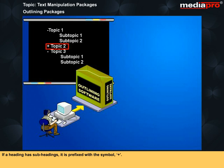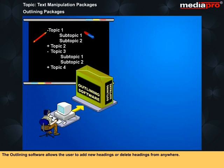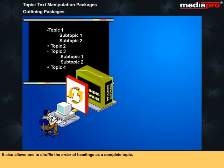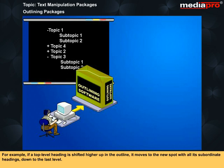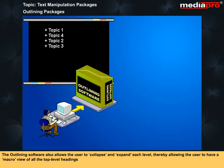If a heading has subheadings, it is prefixed with the symbol plus. If a heading does not have any lower-level entries, it is prefixed with the symbol minus. The outlining software allows the user to add new headings or delete headings from anywhere. It also allows one to shuffle the order of headings as a complete unit. For example, if a top-level heading is shifted higher up in the outline, it moves to the new spot with all its subordinate headings down to the last level. The outlining software also allows the user to collapse and expand each level, thereby allowing the user to have a macro view of all the top-level headings.